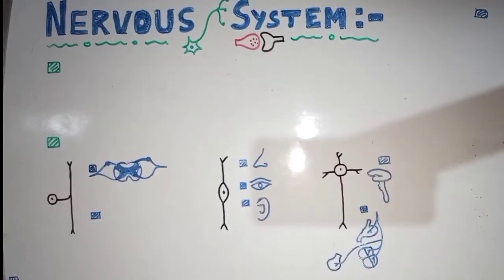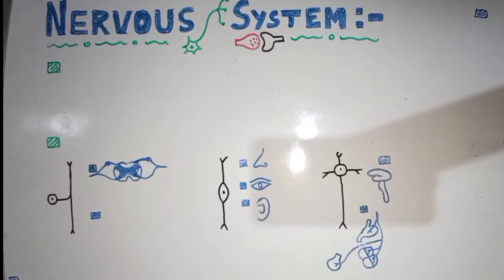The classification of the nervous system is now complete. The nervous system as a whole is divided either according to anatomical division or functional division. From now onwards I will discuss the details of a single neuron and the types of neurons.